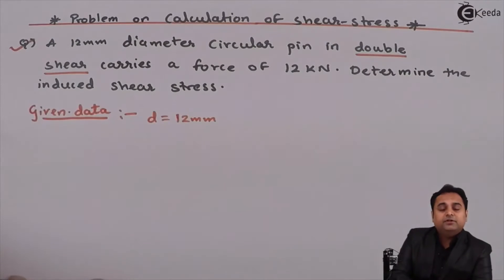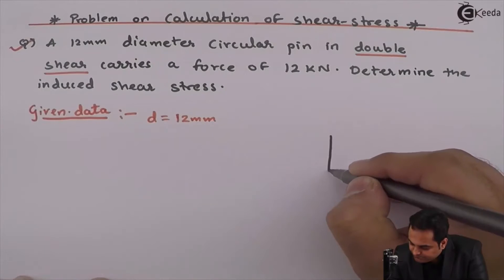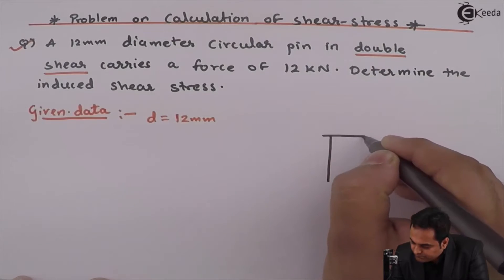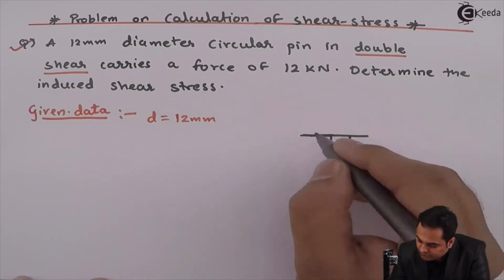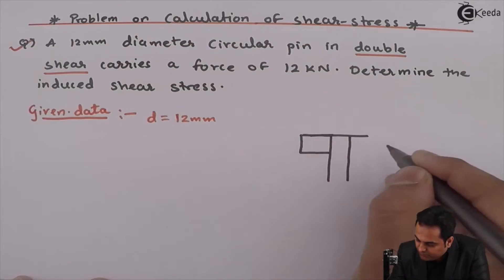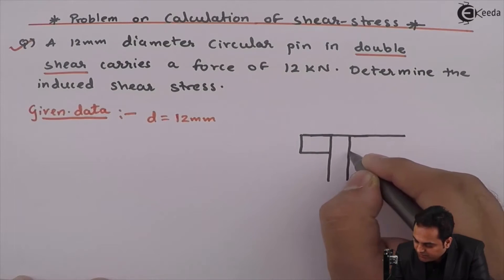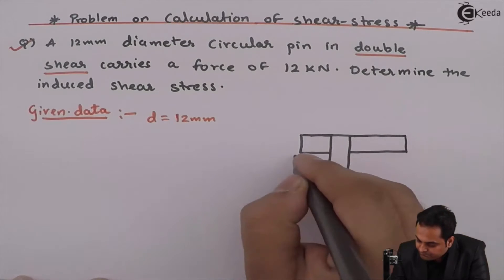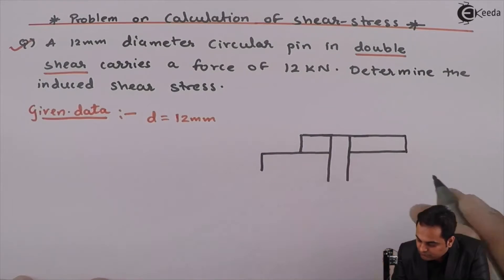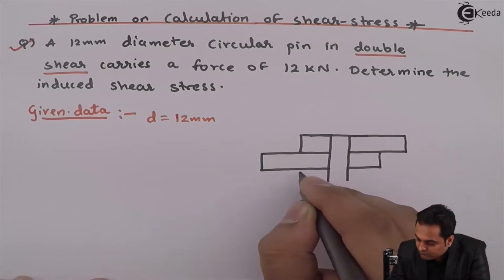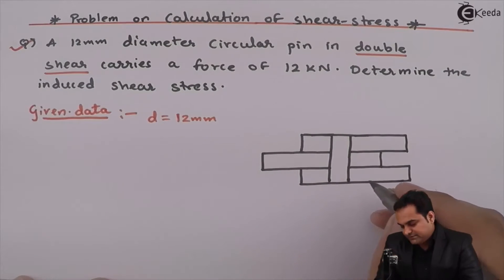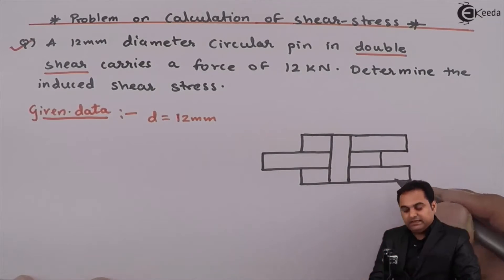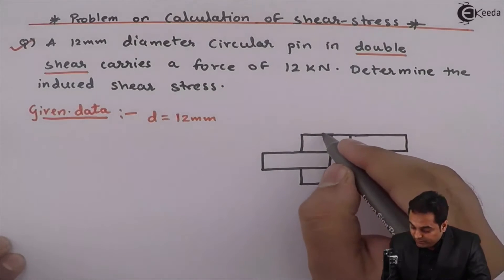Now let me explain the meaning of this double shear with the help of a diagram. In double shear means there will be three plates attached with the help of a pin. So here as we can see we have one, two and three. Three plates which are connected with the help of this pin.